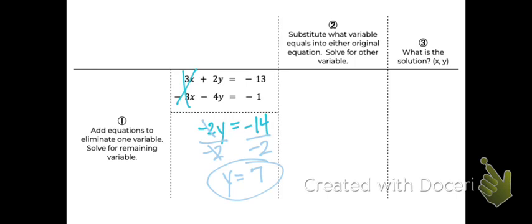So this is the first part of my answer. Now I need to know what is x when y is 7. And to find out, I can substitute what that variable is, y is 7, into either one of the original equations.